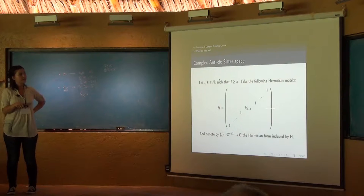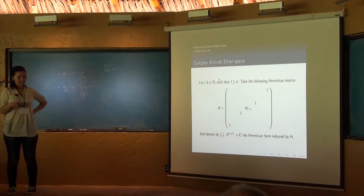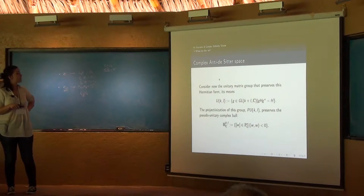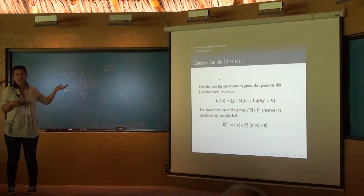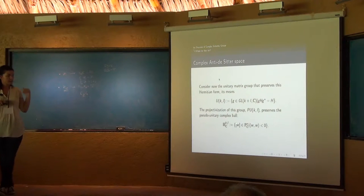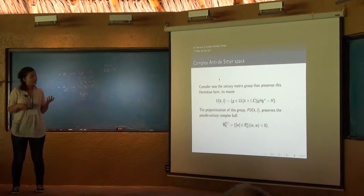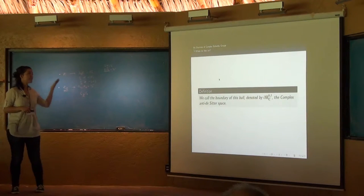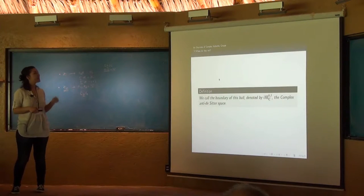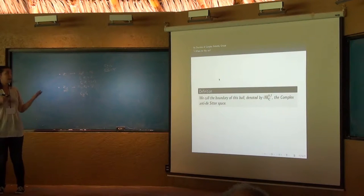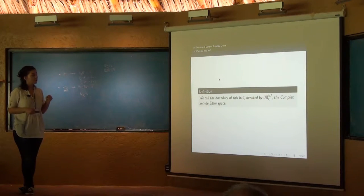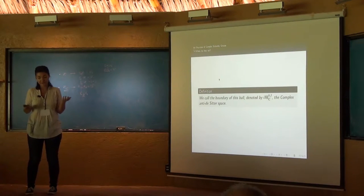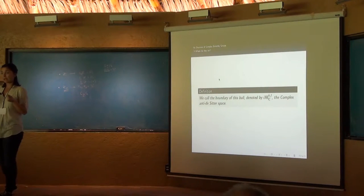So we consider this Hermitian matrix and consider the Hermitian form induced by H. Then consider the unitary matrix groups that preserve this form, that it is U(K,L), in the usual way that we construct those groups. Now take the projectivization of these groups. This group preserves the pseudo-unitary complex ball, and what we call the complex anti-de Sitter space is the boundary of this ball. This is the space where the complex Schottky groups are working for us. So we have a space that is Hermitian, so we would like to think what happened with the signature.